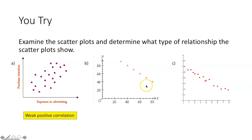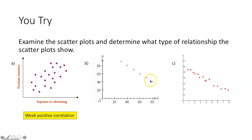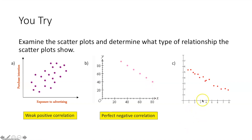For the next scatter plot, are the points going up and to the right or down and to the right? Clearly down and to the right — so it's a negative correlation. Is it perfect, strong, or weak? Are they forming a straight line? Yeah, it looks like it — so this is a perfect negative correlation.